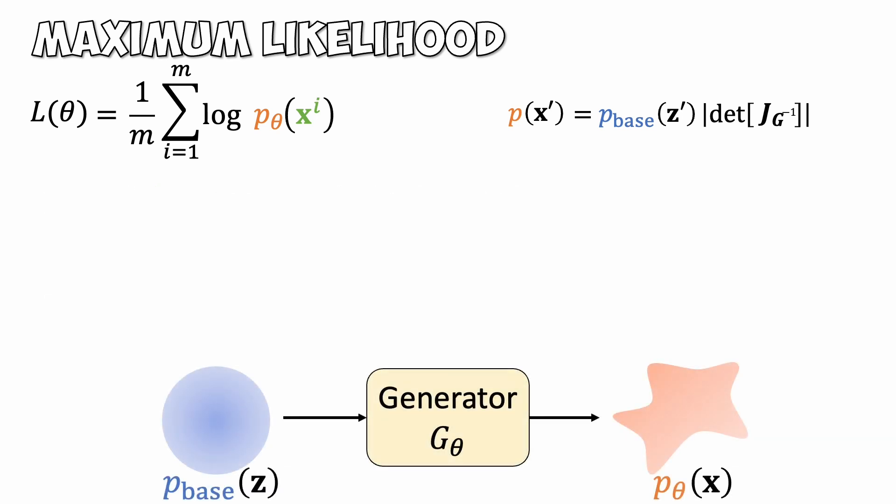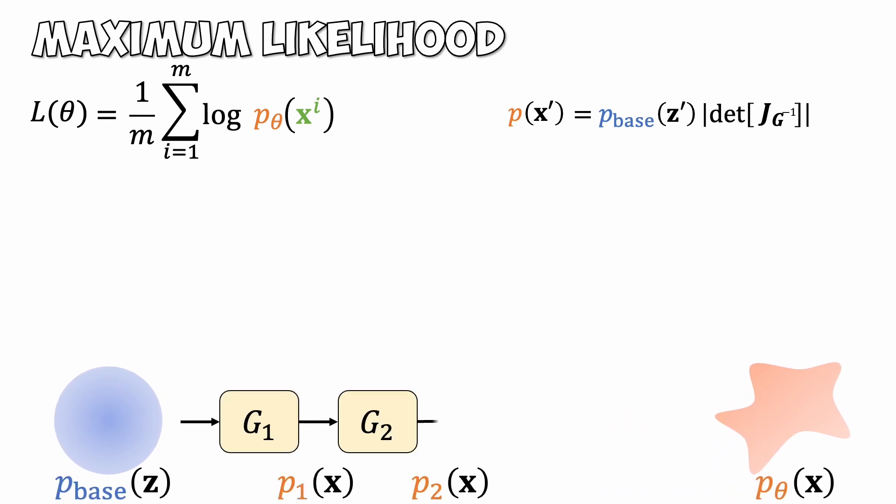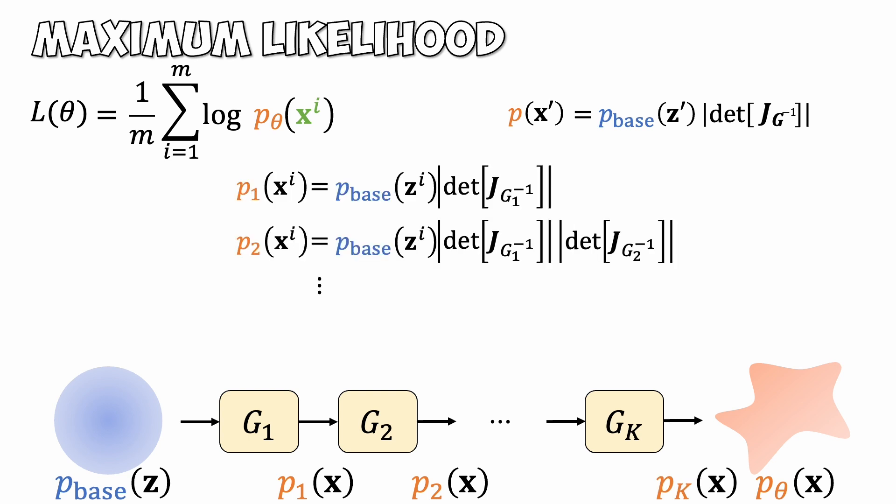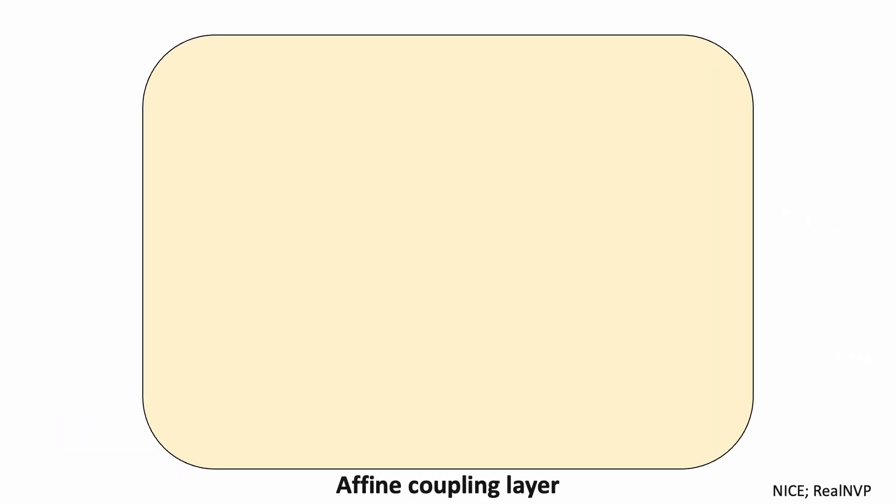It's hard to create a complex transformation with just one single generator. In practice, we compose a collection of generators to gradually transform a simple base distribution into a complicated data distribution. The likelihood computation of such a model is also simple and involves multiplying each individual determinant. Here is the local likelihood. Now let's see some examples of invertible generators in which the determinant of the Jacobian matrix is easy to compute.